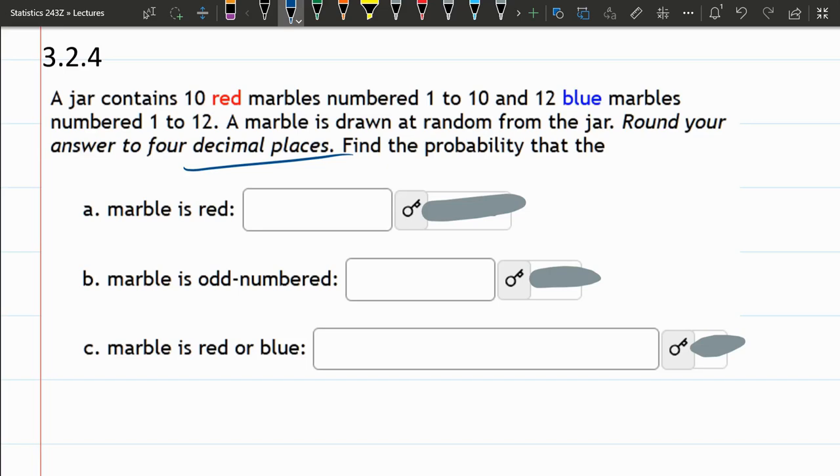So first up, a marble's red. Now they don't tell us total, but we can compute that pretty quick. 10 red, 12 blue, that's all that's in there, there's 22 total.